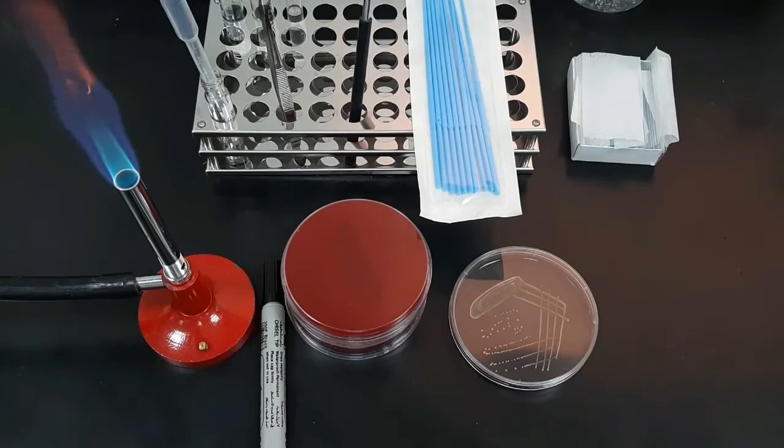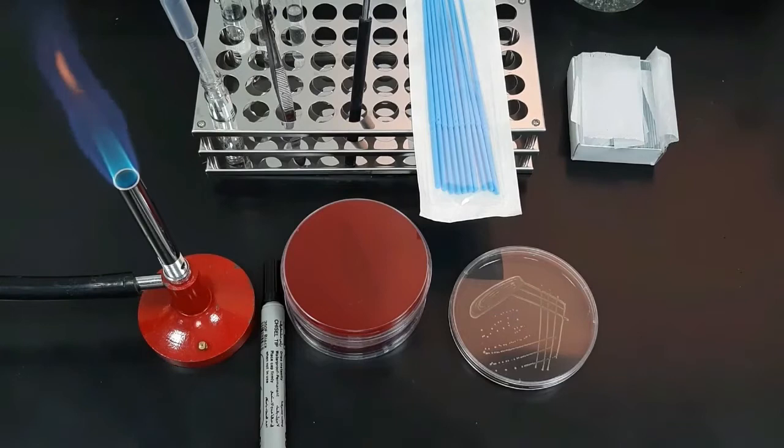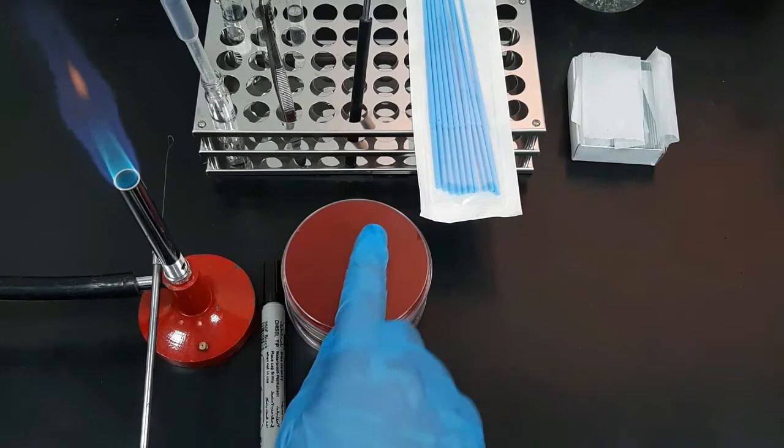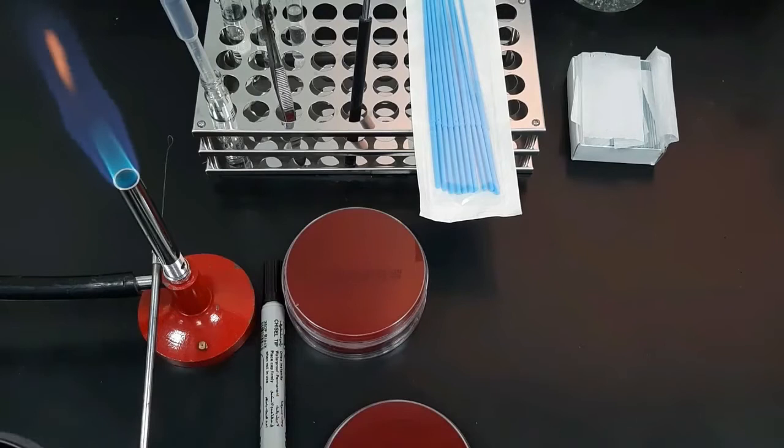To start the procedure, first sterilize the wire loop in the flame and keep it for cooling. After that, mark a fresh culture media plate with the identification name or number.